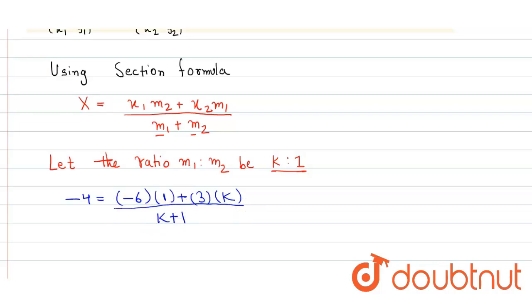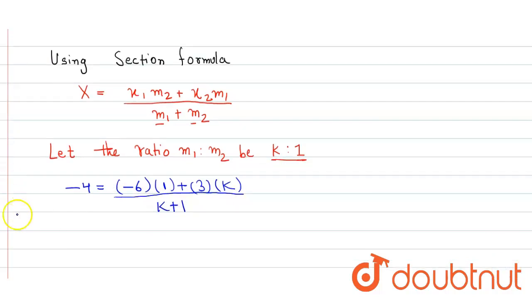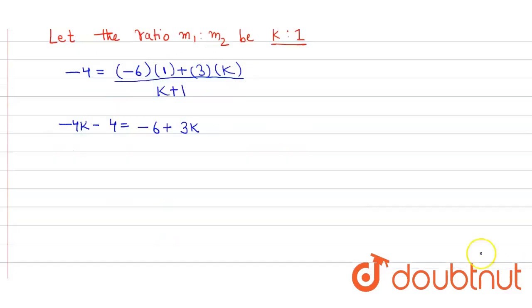So here we get -4k - 4 equals to -6 plus 3k. So here when we solve it we get 7k equals to 2. So the value of k equals to 2 upon 7.